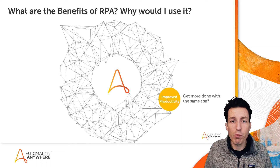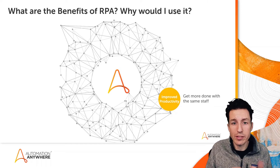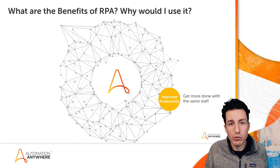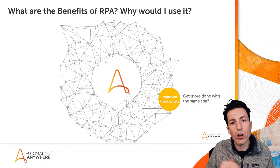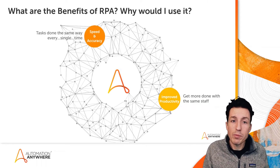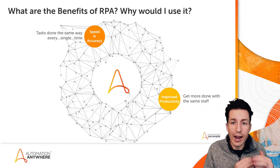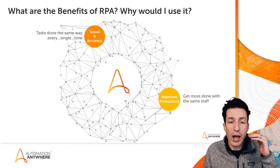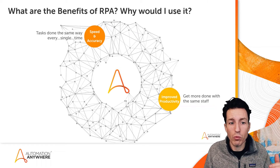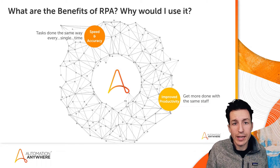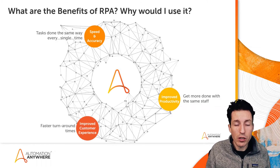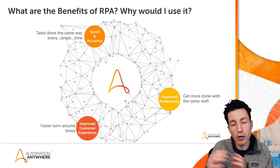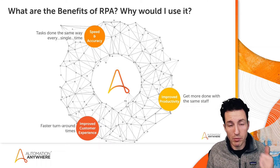Now let's talk about some of the benefits of RPA. First, improved productivity: bots enable us to get more done with the same staffing levels by automating certain tasks while staff handle final approvals or submissions. Second, speed and accuracy: bots do things the same way every single time, executing transactions much more quickly and consistently — not sometimes copy-paste and sometimes hand-keyed. Third, faster turnaround times lead to an improved customer experience.